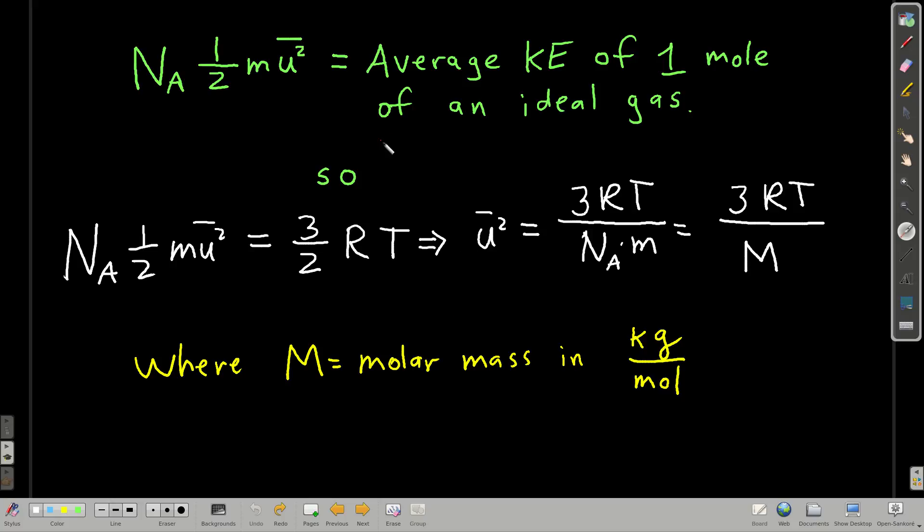So now, another way of writing down the average kinetic energy is one half mass times the mean square speed times Avogadro's number. This mass would be the mass of one molecule, or one atom of gas in kilograms. If we take the mass of one molecule times 6.022 times 10 to the 23rd, that gives us the molar mass. That's really the molar mass, or the mass of one mole of the gas.